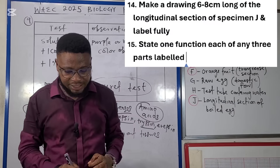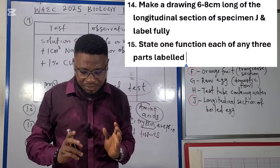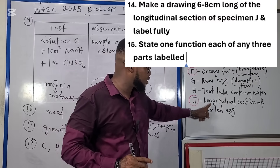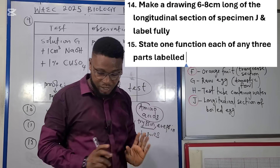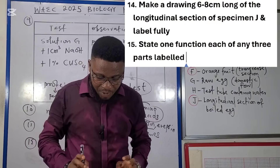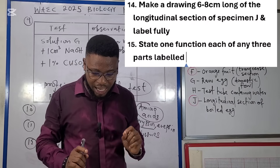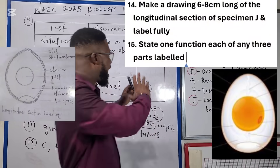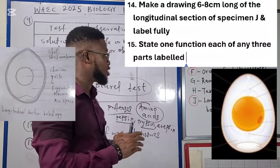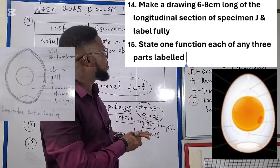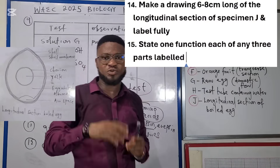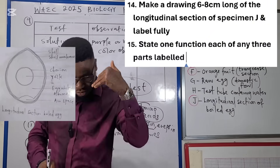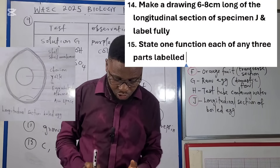The next question asks: make a labelled drawing 6 cm long of the longitudinal section of specimen G — the boiled egg — and label fully. To know how to draw and label, there is a lecture video in the description of this video with all the drawings expected in this exam. Check the link in the description.